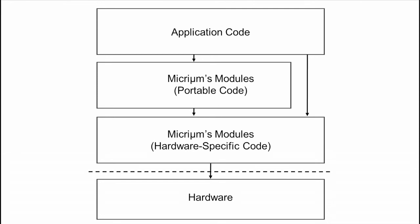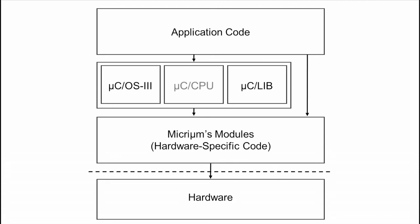The next layer in a kernel-based project is made up of hardware-independent or portable code from Micrim. Code from three different Micrim software modules resides at this layer: Micro-C CPU, which is a collection of definitions and utility routines needed by Micrim's code and also available for use in your application; Micro-C Lib, which contains Micrim's own implementations of a number of standard library functions; and either the Micro-COS 2 or Micro-COS 3 kernel.